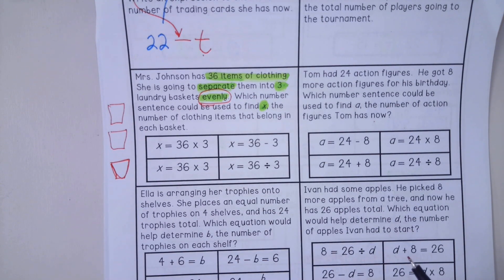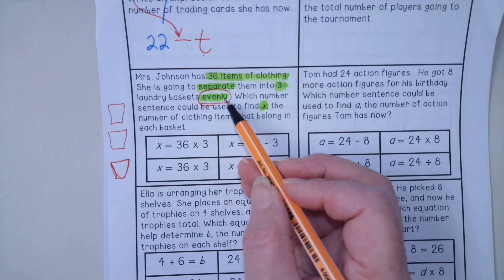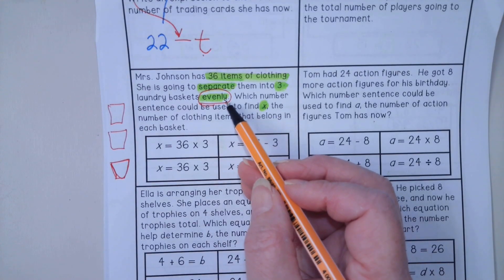What is our operation? Addition, subtraction, multiplication, or division? Well, with that word evenly, I know that it is either going to be multiplication or division, because three times something is even, and three divided by something is even, in the sense of each one has the same amount.